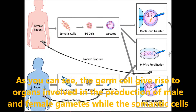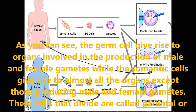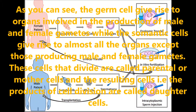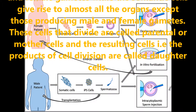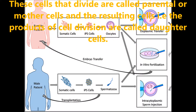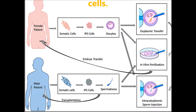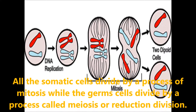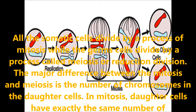As you can see, the germ cell gives rise to organs involved in the production of male and female gametes, while the somatic cell gives rise to almost all organs except those producing male and female gametes. The cells that divide are called parental or mother cells, and the resulting cells — the products of cell division — are called daughter cells. All somatic cells divide by the process of mitosis, while germ cells divide by the process of meiosis, also called reduction division.